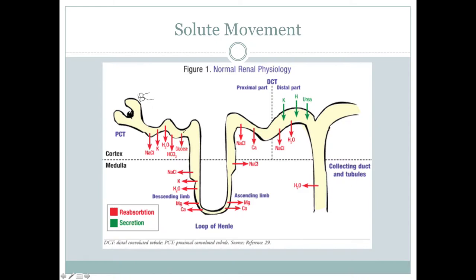Notice the proximal convoluted tubule — there's a huge amount of reabsorption here, which makes sense when we think about things moving high to low concentration. At the loop of Henle, all the different products are leaving the descending limb. At the ascending loop of Henle, you don't see water moving anywhere. The descending limb has movement of water back into the blood, but once it moves up to the ascending limb, there's only movement of sodium chloride, magnesium, and calcium reabsorbed back into the bloodstream.